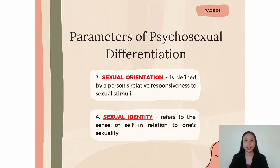Number three, the term sexual orientation is defined by a person's relative responsiveness to sexual stimuli — in other words, it is about who a person is sexually attracted to. Sexual orientation may be self-identified as heterosexual if sexually attracted only to people of the opposite sex, bisexual if attracted to people of both the same and opposite sex, and homosexual if attracted only to people of the same sex. In contemporary research related to sexology, psychophysiological techniques like penile plethysmography or vaginal photoplethysmography are used to assess sexual orientation.